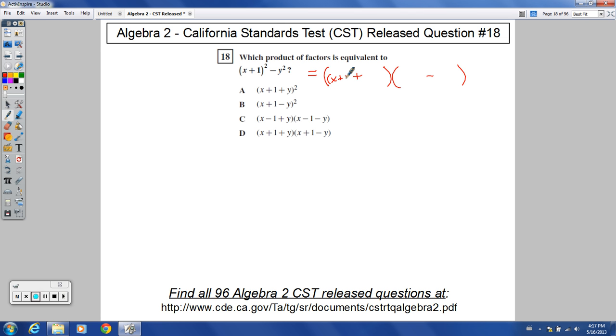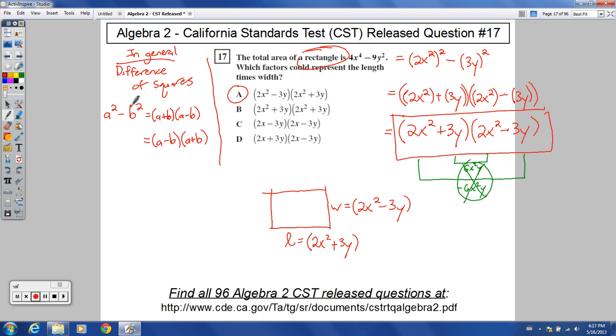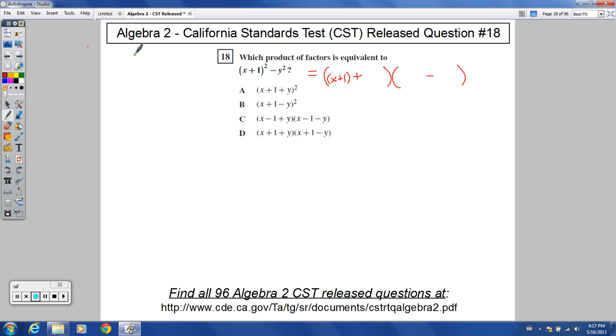But your a is x plus 1. So in place here of a, I would put x plus 1. I'm just going back to this idea right here: a plus b, a minus b. We have a squared term right here and a squared term right here.